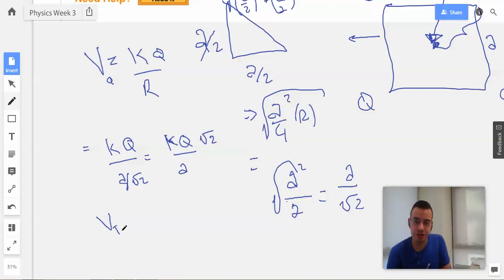So V, and I'll call this V total, I can also call it V Q Q Q Q. So Q is going to be 4 times the square root of 2, because there's 4 of them, KQ over A.